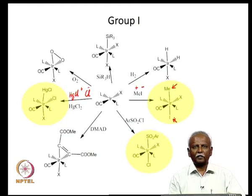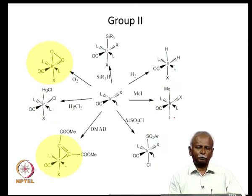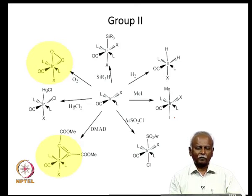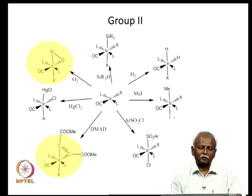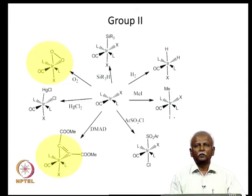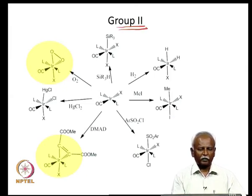The second group involves molecules where multiple bonds exist in the part adding onto the metal. For example, O2 has a double bond between the two oxygens and adds onto Vaska's complex, forming 2 new bonds to iridium. As a result, the bond between the 2 oxygen atoms changes from a double bond to a single bond, requiring the 2 atoms added onto iridium to be cis-related. So in group 2 oxidative additions, you end up with cis additions.